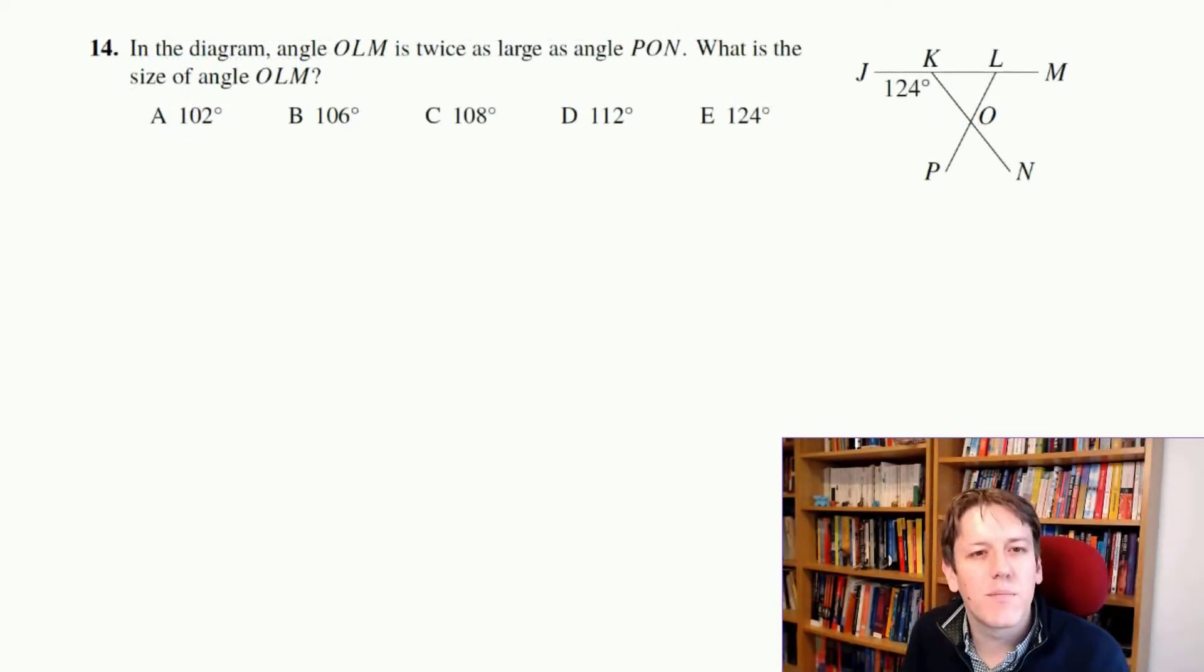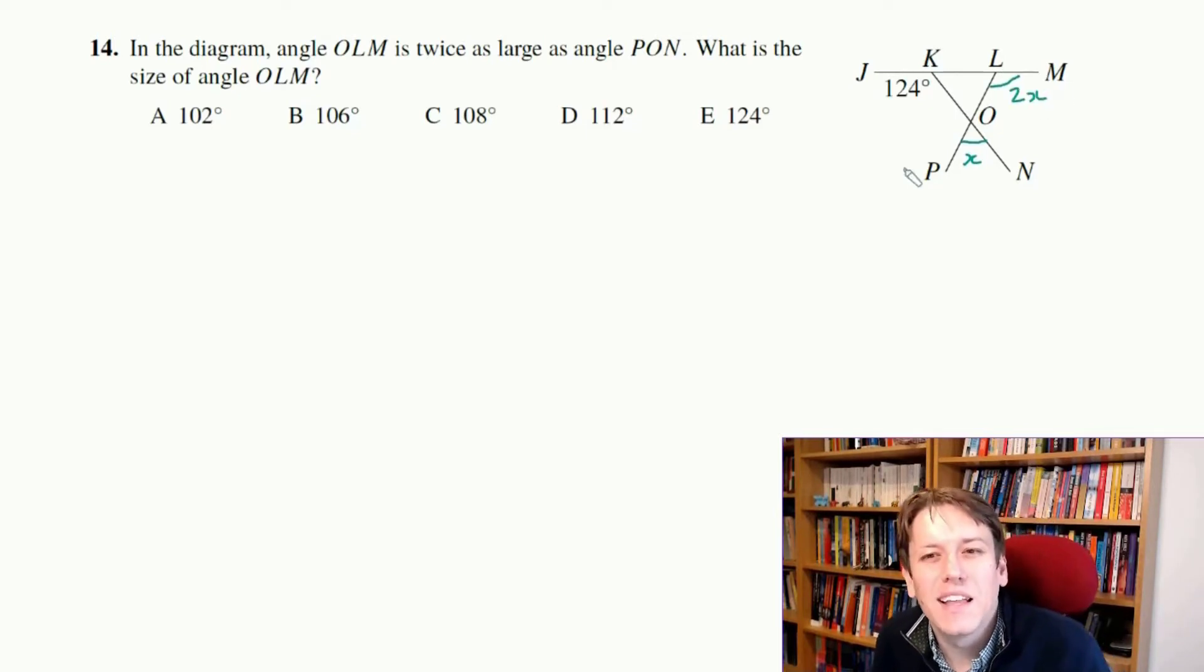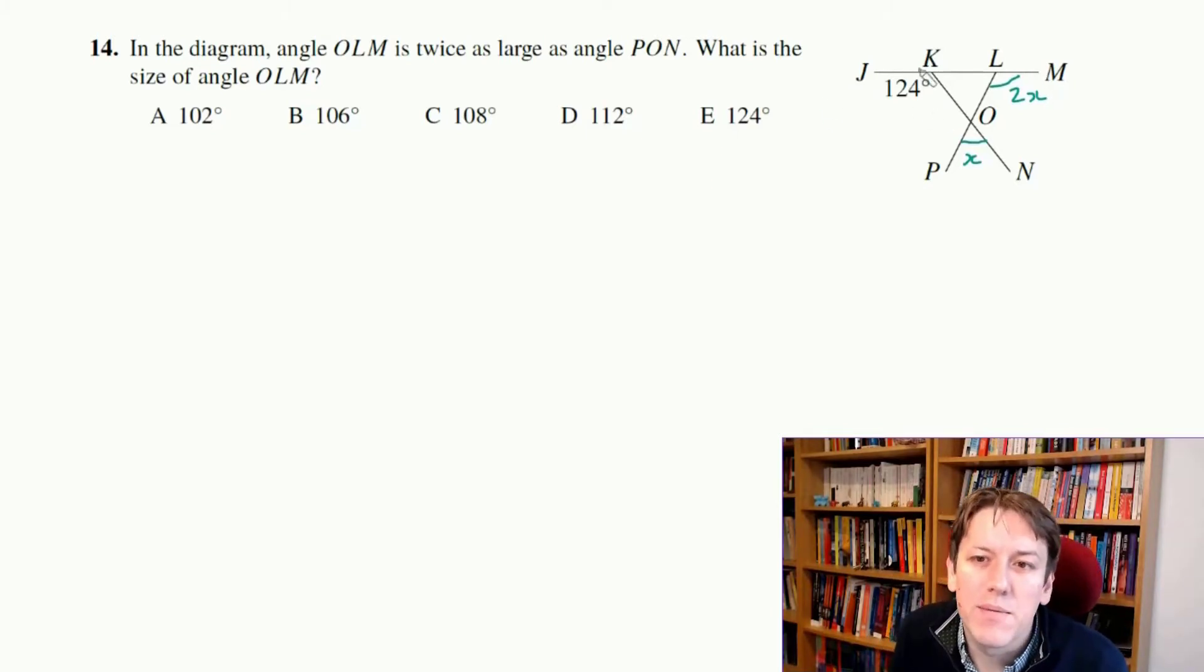It says in the diagram angle OLM is twice as large as PON. So in this sort of question, the first thing I would do is I would just label those, right? So twice as large as PON, so PON will make that one X, and OLM, this one here, well, that's twice as large, so let's call that 2X. And then just start filling in and I think, okay, we want to work out what this OLM is.